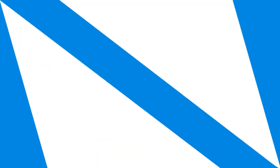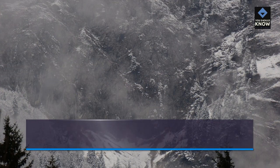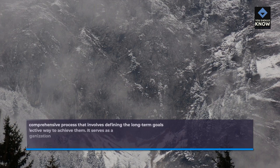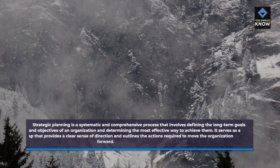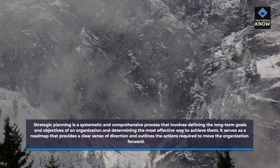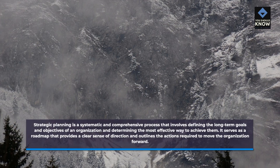Understanding strategic planning. Strategic planning is a systematic and comprehensive process that involves defining the long-term goals and objectives of an organization and determining the most effective way to achieve them. It serves as a roadmap that provides a clear sense of direction and outlines the actions required to move the organization forward.